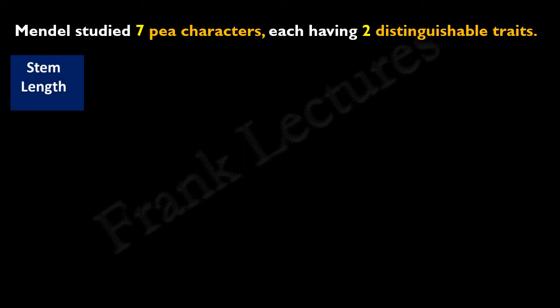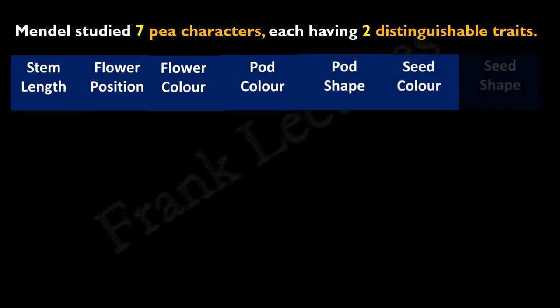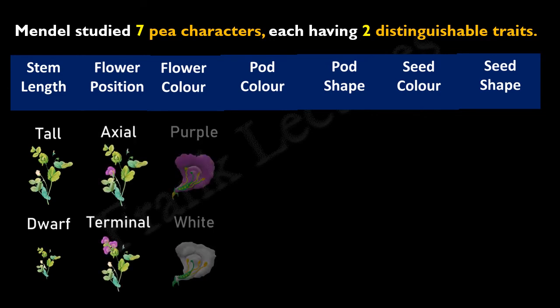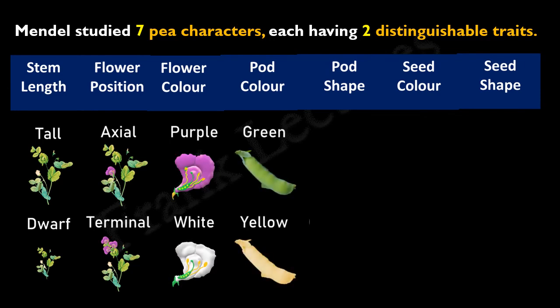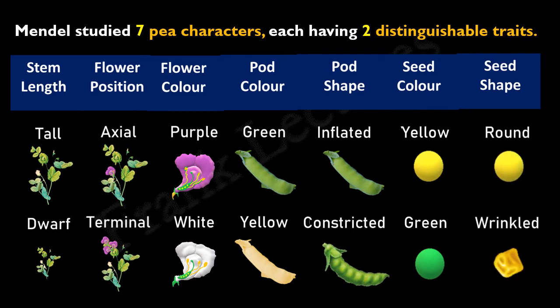Mendel studied seven characters of the pea plant: flower color, pod color, pod shape, seed color, and seed shape, as well as stem length and flower position. Traits for stem length were tall and dwarf. For flower position, axial and terminal. Flower color: purple and white. Pod color: green and yellow. Pod shape: inflated and constricted. Seed color: yellow and green. Seed shape: round and wrinkled.